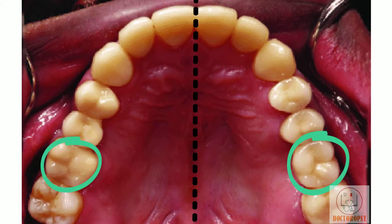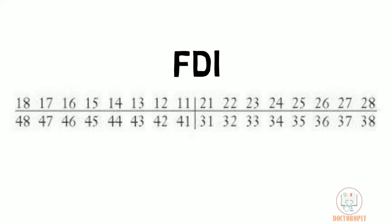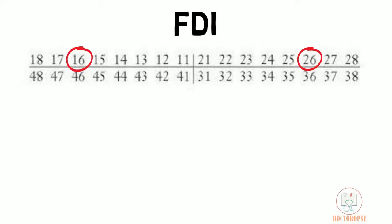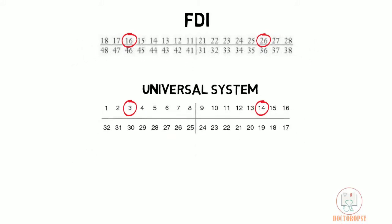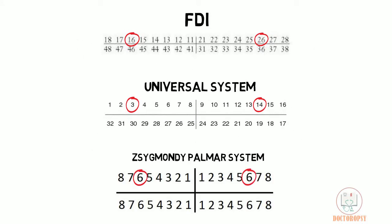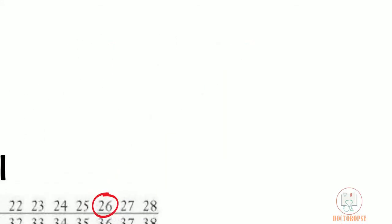Maxillary first molar is the sixth tooth from the midline. Its tooth number in the FDI system is 16 and 26, in the universal system 3 and 14, and in the Zsigmondy-Palmer system the tooth number is 6 with appropriate quadrant brackets.